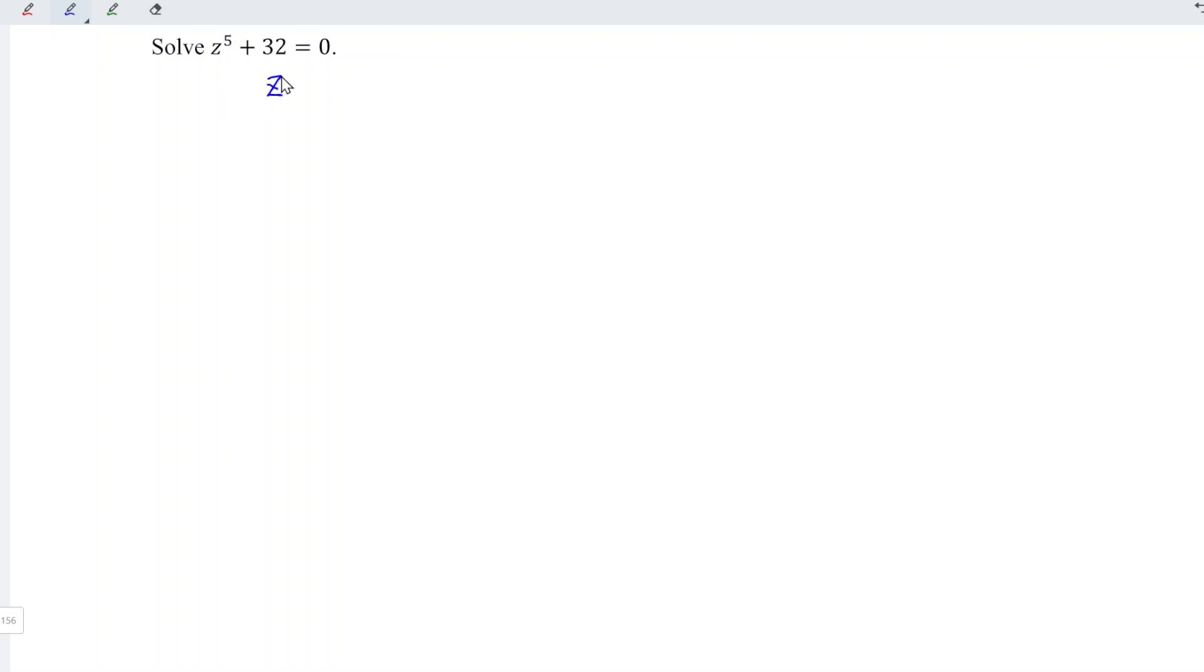Firstly, let's rewrite. We have z to the power of 5 is equal to negative 32. And we have to let z to the power of 5 be equal to w, where w is equal to negative 32 plus 0i, which means that the real part is negative 32, while the imaginary part is 0. We should first express this rectangular form in the form of polar form.